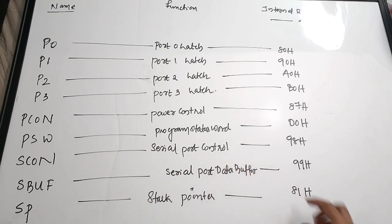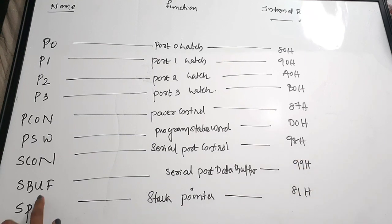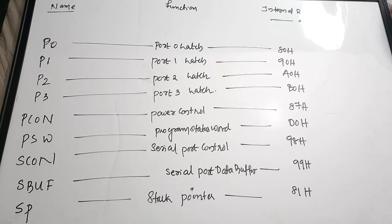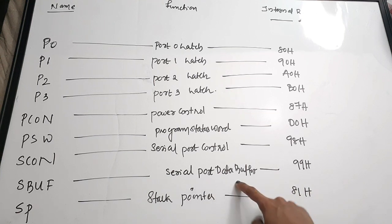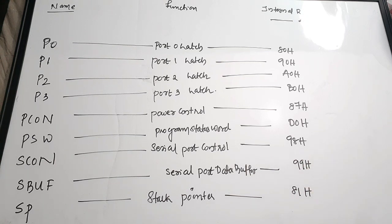The SCON (Serial Port Control) register at address 98H is used for serial communication control. The SBUF (Serial Port Data Buffer) at 99H buffers data coming from the serial port — data is stored directly into SBUF and then sent to various locations.